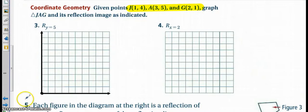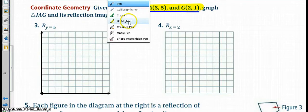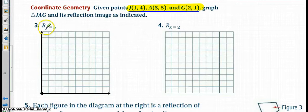All right, so when we look at numbers three and four, our first step is to graph our JAG triangle. And so it'll be the same triangle for both three and four. The differences is that in three, you're being asked to reflect on a y line, y being equal to negative 5, and in four, you're being asked to reflect an x line.